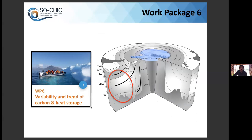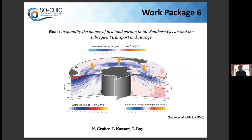The sixth and final scientific work package looks at variability and trends of carbon and heat storage, linking the fluxes with ventilation and storage. Basically this work package ties together all the previous ones to address decadal variability and the question of storage. The goal is to quantify the uptake of heat and carbon in the Southern Ocean and subsequent transport and storage. I'll work on that with Nikki Gruber from ETH Zurich, Torsten Konzer from AWI in Germany, and Tilla Roy from Paris.